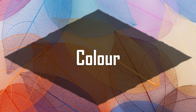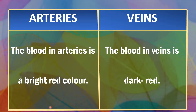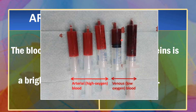Now, let's differentiate arteries and veins on the basis of the color of the blood flowing through them. The blood in arteries is a bright red color while the blood in veins is dark red. Arterial blood is bright red because the hemoglobin present in it has received plenty of oxygen. In contrast, the hemoglobin in venous blood has lost a lot of oxygen, so venous blood is dark red, almost blackish in color.